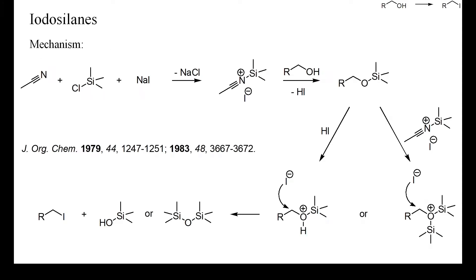Iodosilanes can also be used, but most deoxyiodinations by means of silanes are conducted with mixtures of chlorosilanes and some ionic iodide. One proposed mechanism is sketched here. It is assumed that in this reaction the chlorosilane is activated by reaction with the solvent.